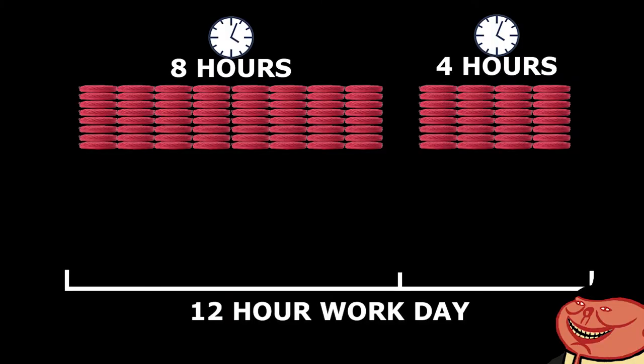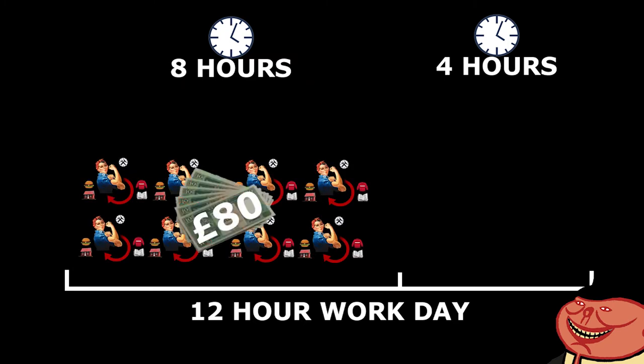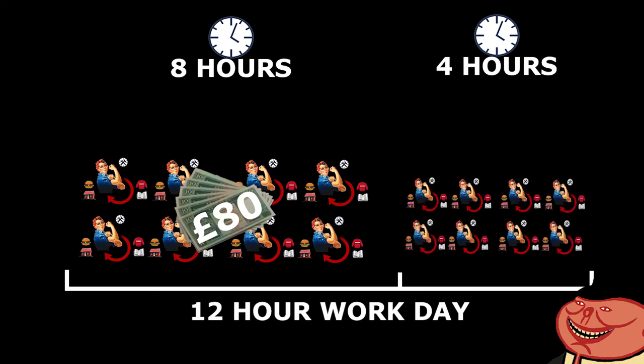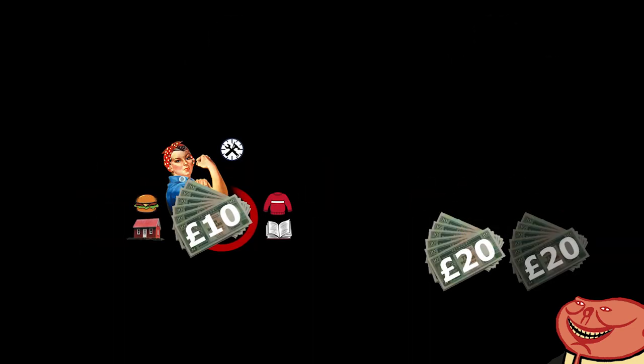If the capitalist only employed two people, the maintenance of their life would be their only motivation, not increased wealth. If the capitalist wanted to live twice as well as the labourer and also turn half of the money taken from surplus labour into further capital to grow their business, they would have to employ eight workers. The capitalist would have to advance eight times 12 hours in constant capital — the means of production — or £120, and eight labourers or £80 of variable capital. The capitalist would now end with eight times the amount of surplus labour than before, or £40: £20 to live on twice as well as the labourer, and £20 to use as future capital.